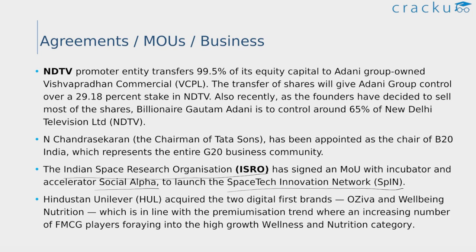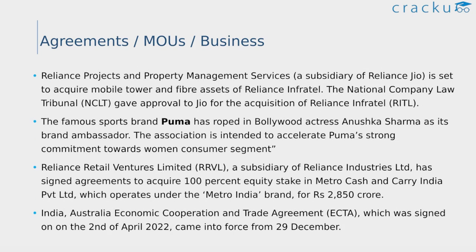SPIN is India's first dedicated platform for innovation, curation, and venture development for the burgeoning space and entrepreneurial ecosystem. The space agency said the tie-up is a one-of-a-kind public-private collaboration for startups and SMEs in the space industry. The famous sports brand Puma has roped in Bollywood actress Anushka Sharma as its brand ambassador, intended to accelerate Puma's strong commitment towards the women consumer segment.